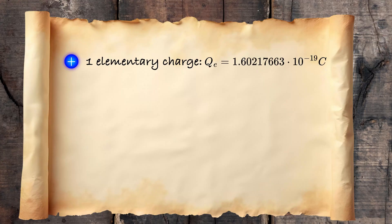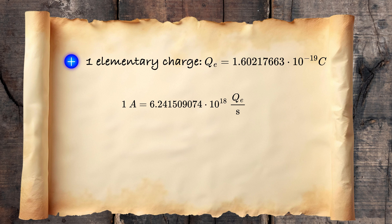But after the year of 2019, this value is no longer fixed and must be measured. Since ampere was defined by fixing the value of elementary charge to this value, and therefore one ampere is this number of elementary charges per second.